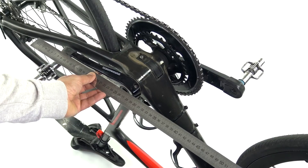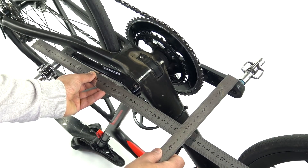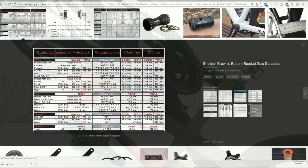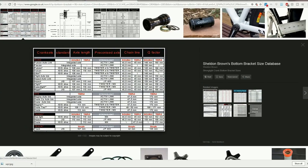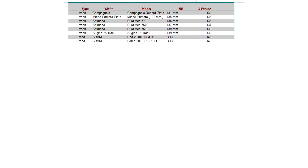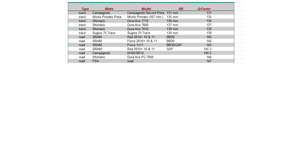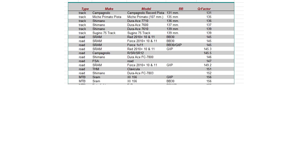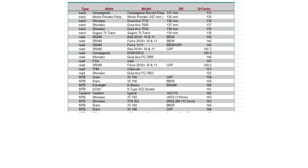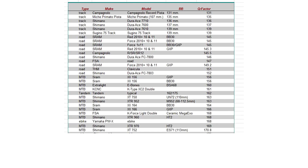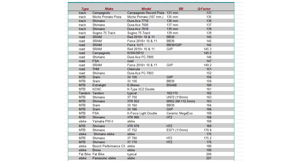Let's put some numbers on this. If you look up a chart of Q Factors for double chainsets, you'll find measurements around 150 millimeters; for triple, around 160 to 170. Ranking from low to high: the Campagnolo Record Pista track crankset comes in at about 131mm. On the road, SRAM Red and SRAM Force are around 145mm. Mountain bike is roughly 160 to 170mm, and fat bike comes in at around 200mm — so the Q Factor can be quite appreciable.